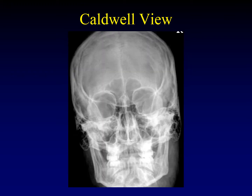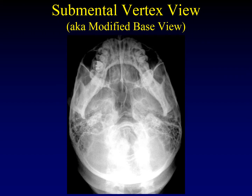Let me also mention the other frontal projections not routinely used for sinus imaging. If the petrous apex projects way up over the top of the skull, that's a Towne's view. If it projects over the top of the orbit, that's an angiographic AP. If it projects over the center of the orbit, that's a standard AP — and you may accidentally acquire those when trying to get sinus films. If you tilt the head all the way back and project from underneath the chin with the film on top of the patient's head, that's called a submental vertex view or modified basal view. This is good for looking at the sphenoid sinuses. You're looking right through the nasopharynx, so don't be confused by the air column in the nasopharynx.